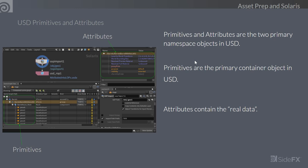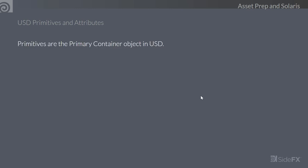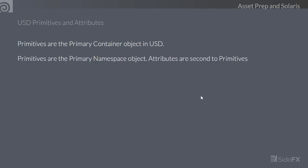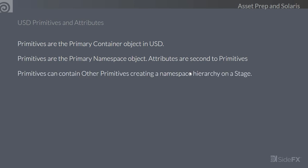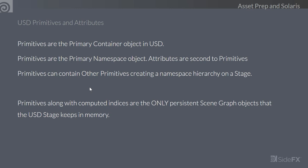Primitives can contain other primitives, creating a namespace hierarchy on the stage. Primitives, along with computed indices, are the only persistent scene graph objects the USD stage keeps in memory. The composition of these primitives — how they relate to and are nested inside each other — is all kept in memory, while the attributes on the primitives themselves can remain dynamic.